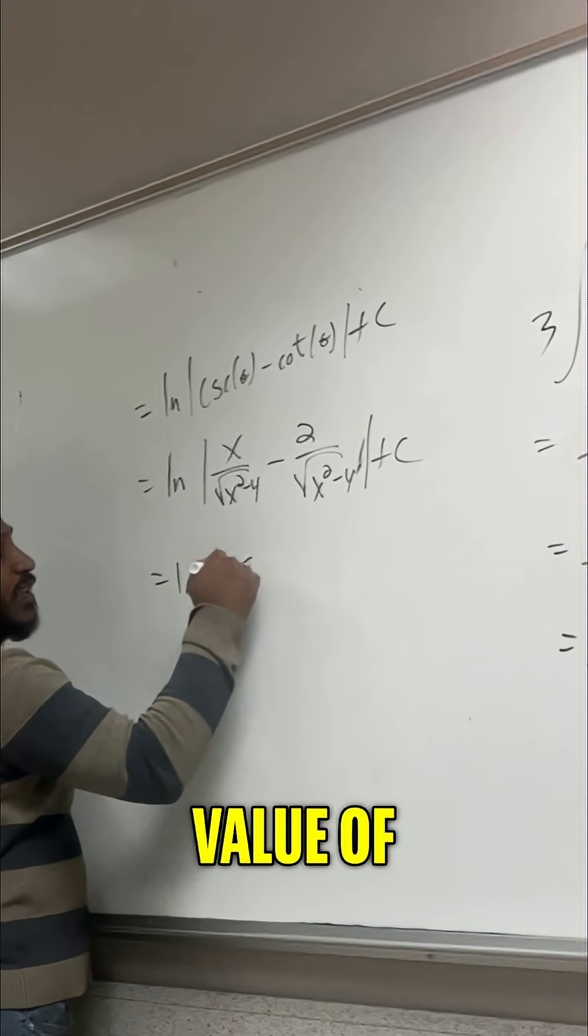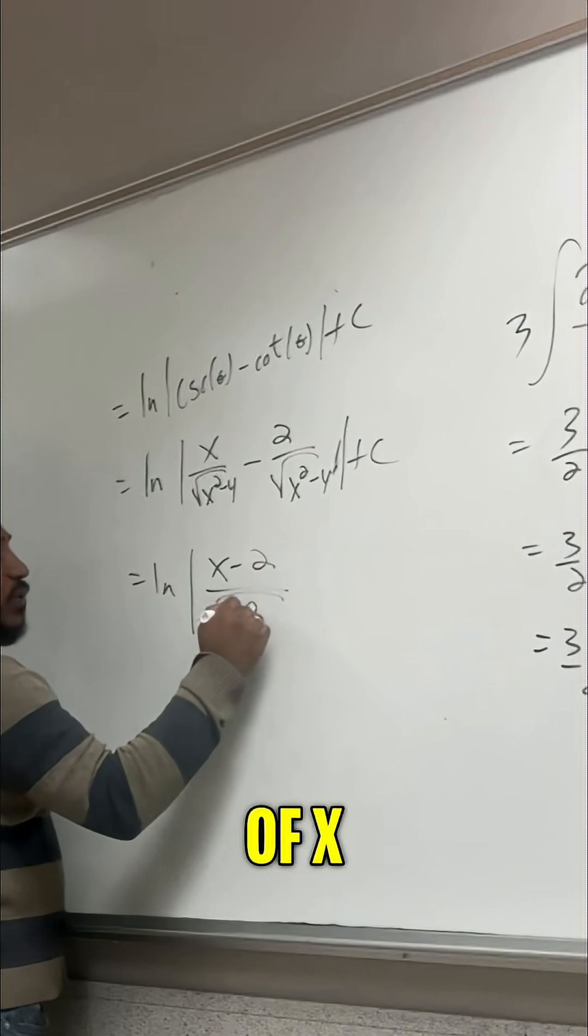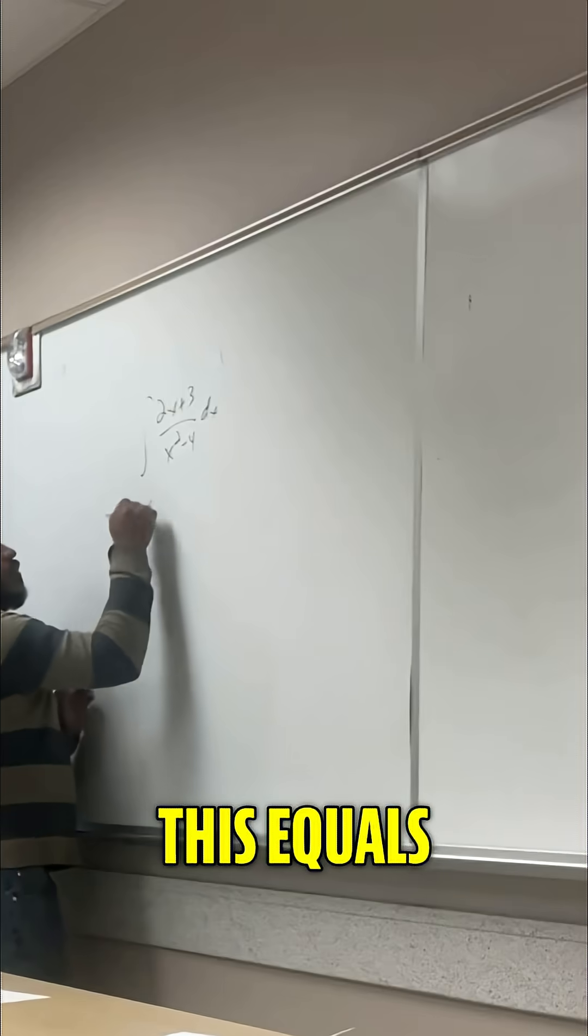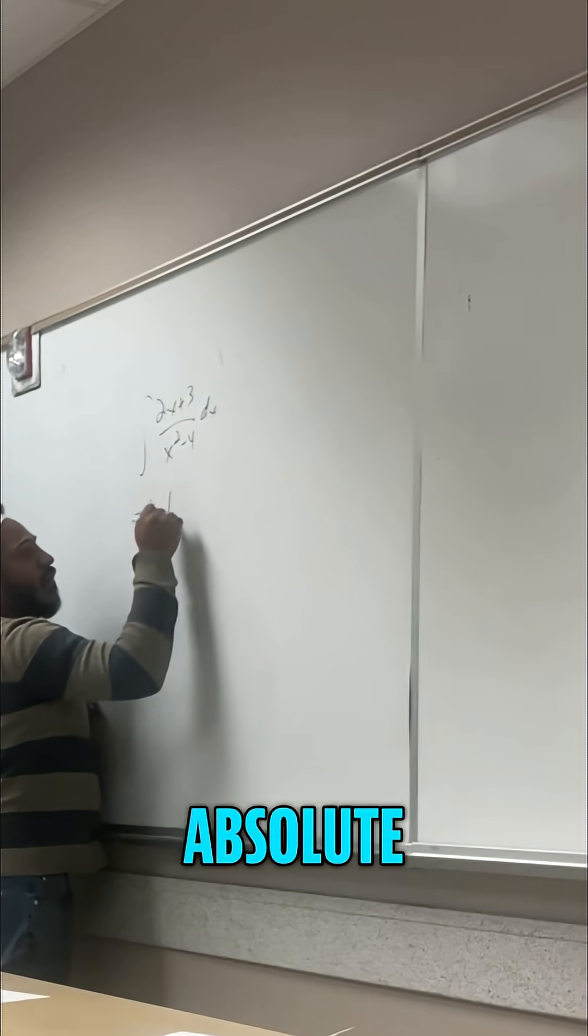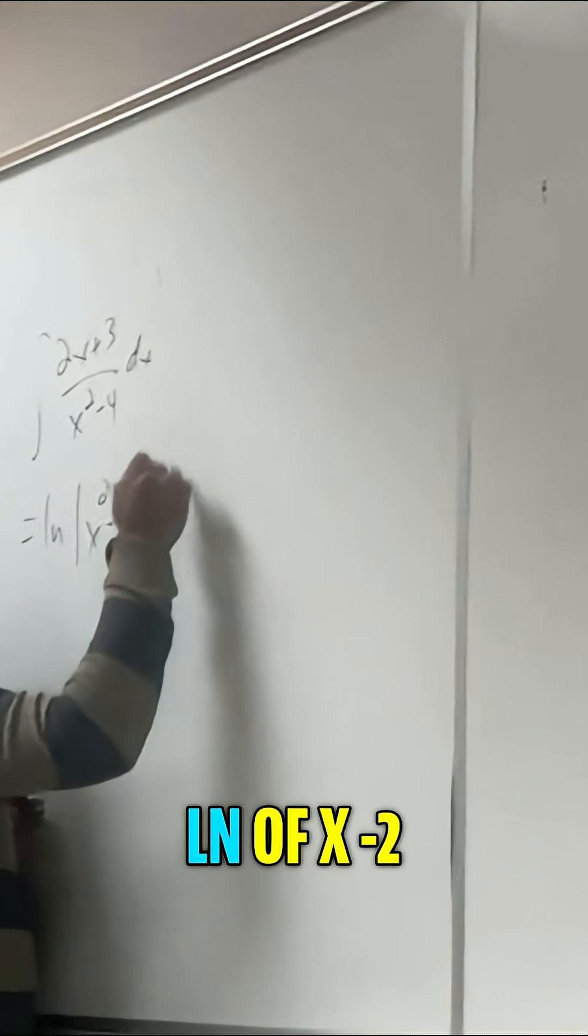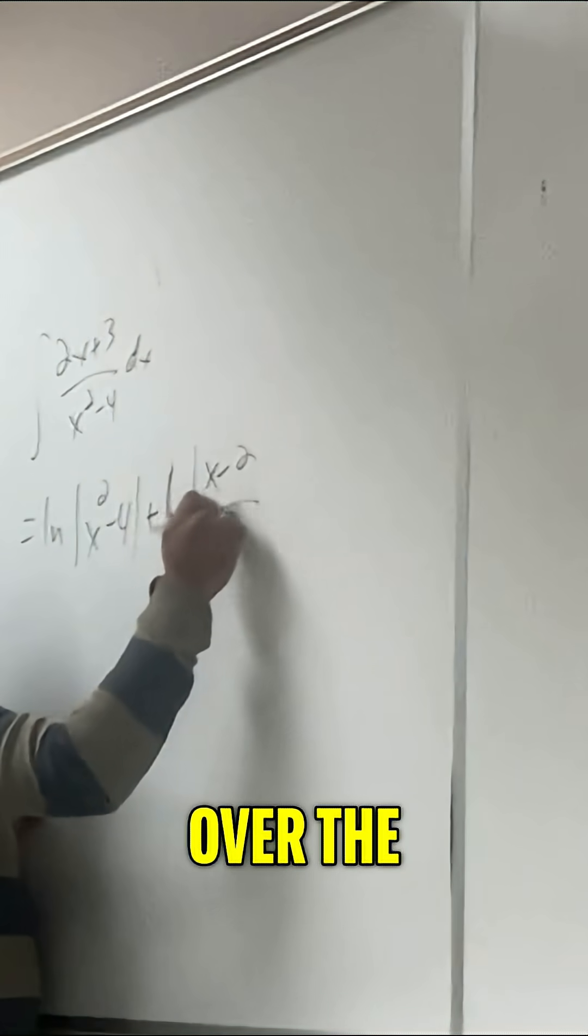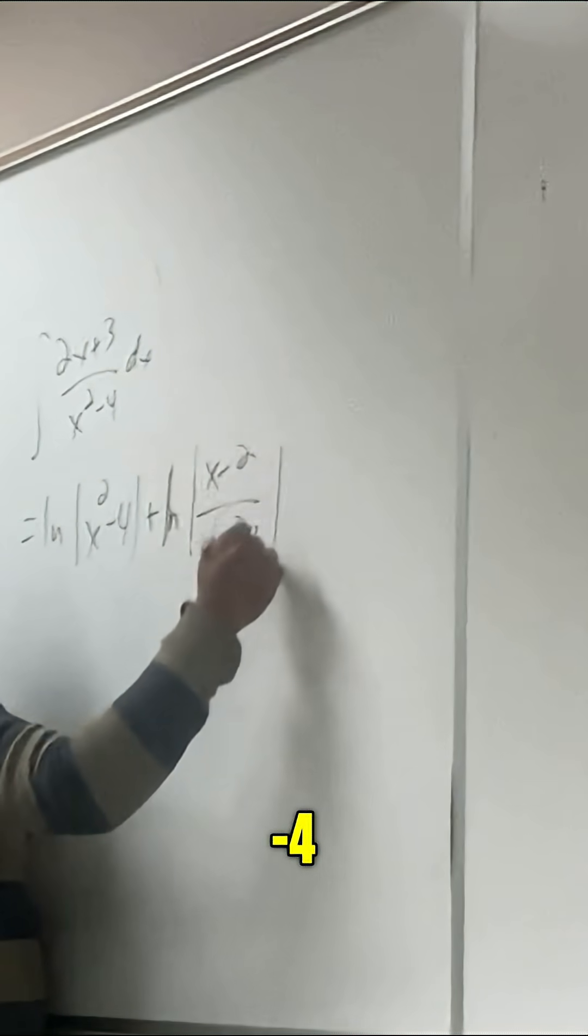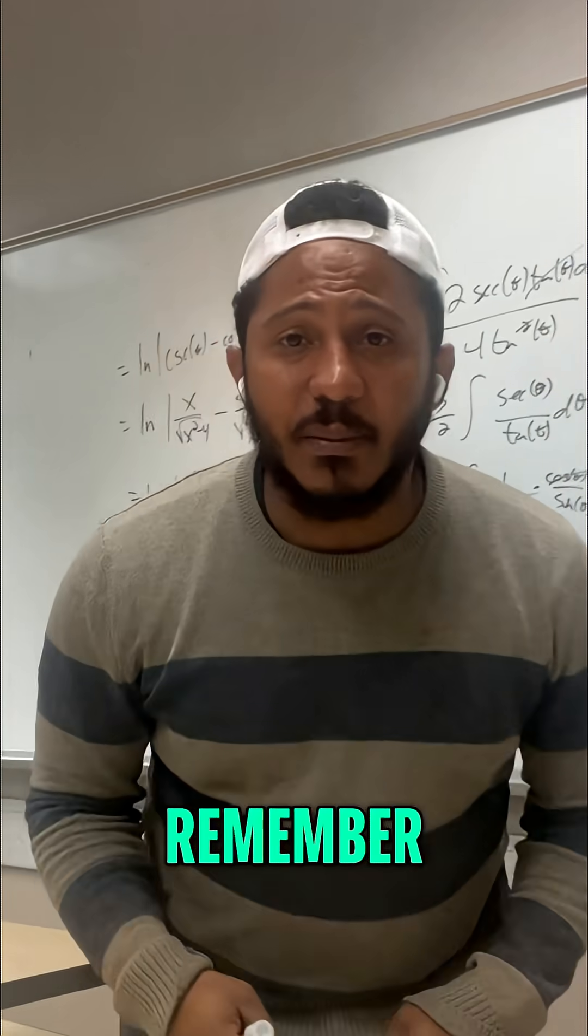This is the ln of absolute value of x minus 2 over the square root of x squared minus 4 plus c. This equals the ln of the absolute value of x squared minus 4, ln of x minus 2 over the square root of x squared minus 4. Don't forget your plus c. Always remember, math is everywhere.